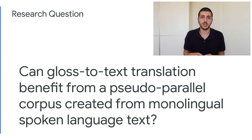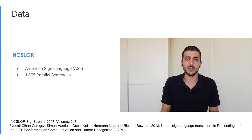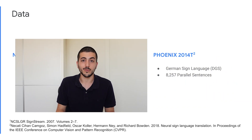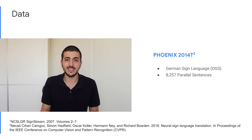Does pre-training on corrupted monolingual data result in a better translation model? To answer this question, we experiment with two low-resource gloss to text translation datasets. For American Sign Language, we use the National Center for Sign Language and Gesture Resources dataset, and for German Sign Language, we use the RWTH Phoenix Weather 2014-T dataset.